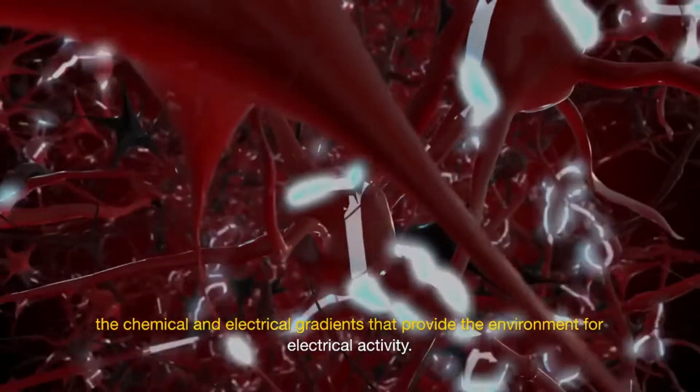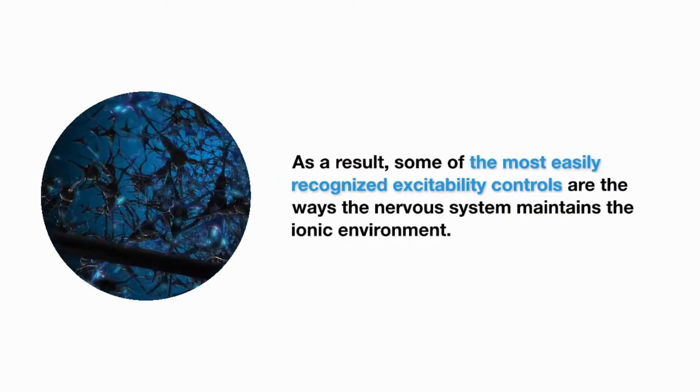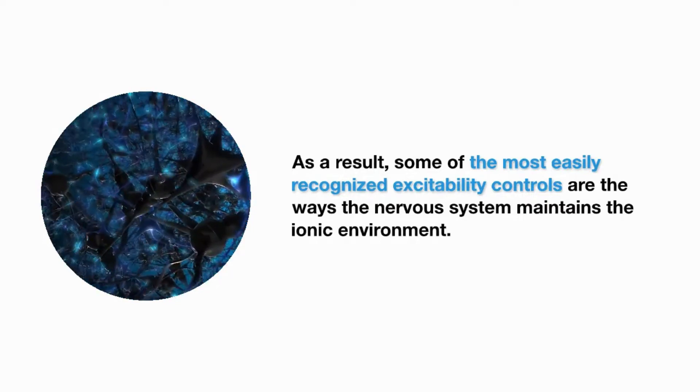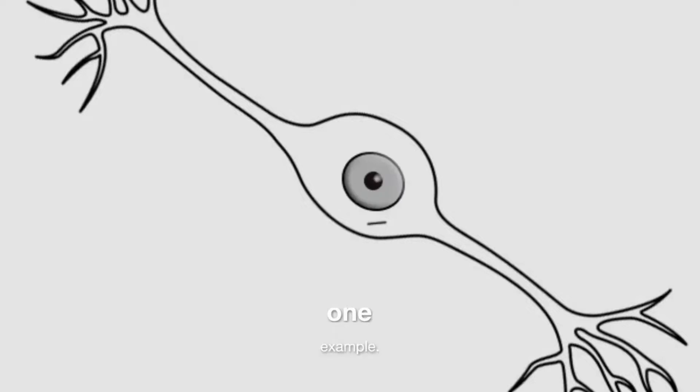As a result, some of the most easily recognized excitability controls are the ways the nervous system maintains the ionic environment. The electrical basis of resting membrane potential is one example.